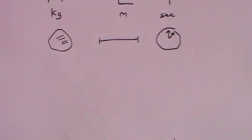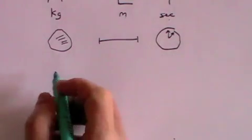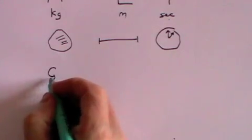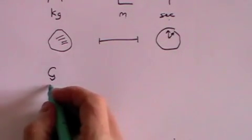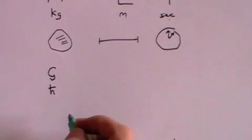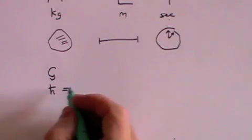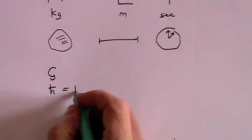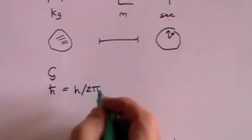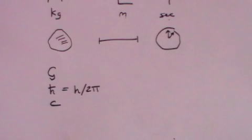Well, we think we know three fundamental constants. That is the gravitational constant G, Planck's constant h-bar, which is Planck's reduced constant that equals h over 2 pi, and c, the speed of light.